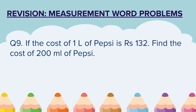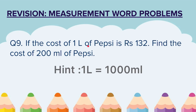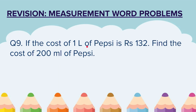Question 9. If the cost of 1 liter of Pepsi is rupees 132, find the cost of 200 milliliters of Pepsi. Here is a hint: 1 liter equals 1000 milliliters. First convert 1 liter into 1000 milliliters — it is sold for rupees 132. Then find the cost of 200 milliliters.